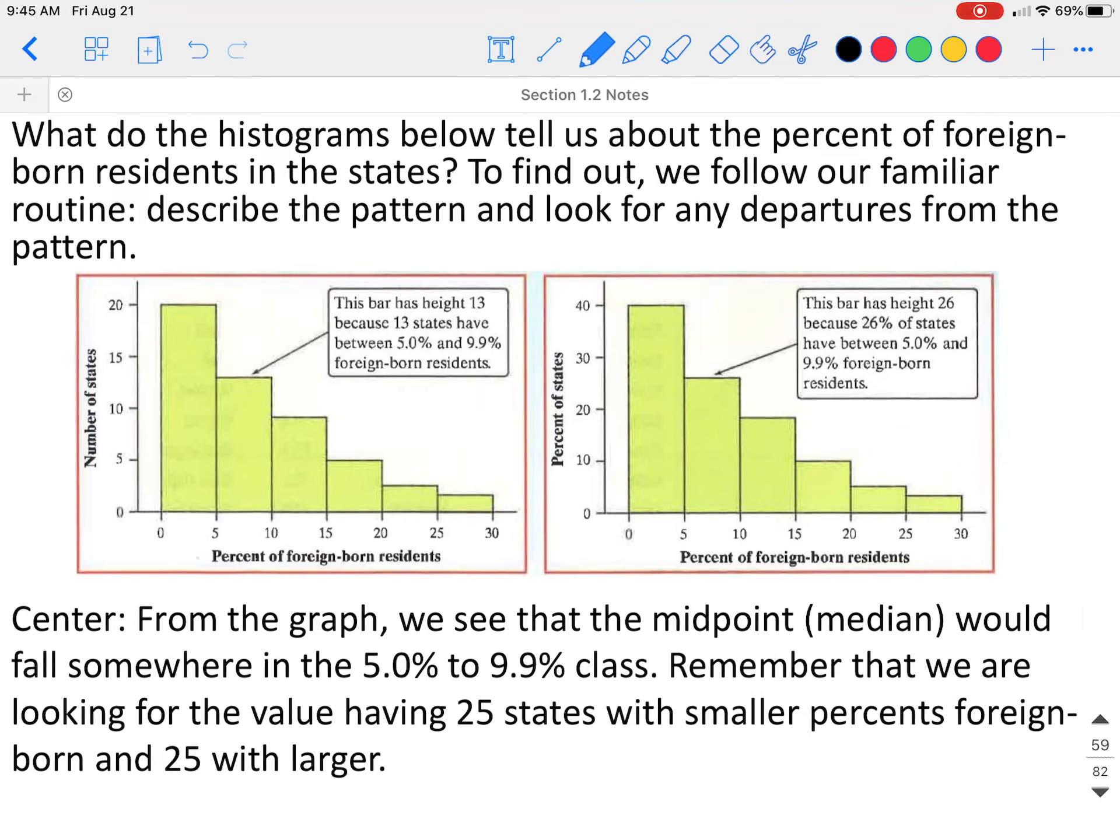If we look at the center, from the graph we see that the midpoint, which we're going to call the median in this case, would fall within this bar somewhere. So we can't say exactly where that would be located. Now there are 50 states. How did we find the middle? If there are 50 states, the middle would be between the 25th and 26th state.